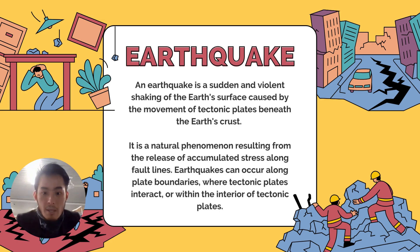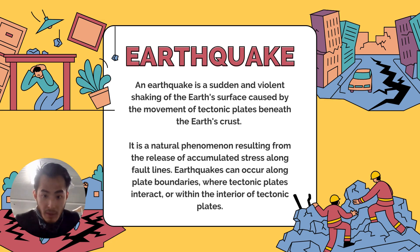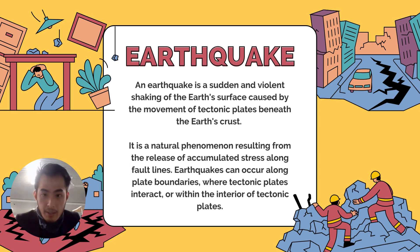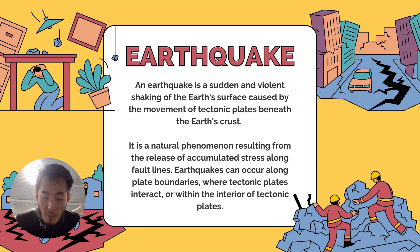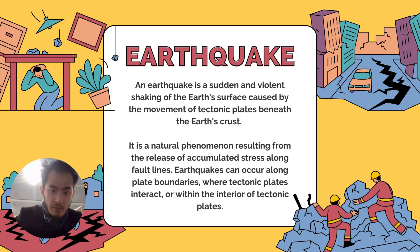We also have earthquakes. An earthquake is essentially a movement. There's sometimes a link between earthquakes and volcanoes — many places that have volcanoes also have earthquakes. Interestingly, there was actually an earthquake yesterday in Melbourne, even though Australia is not located in the Ring of Fire or on the boundary between two tectonic plates. But we can still get earthquakes when there's movement from the ground, causing shakiness on the surface of the Earth's crust.